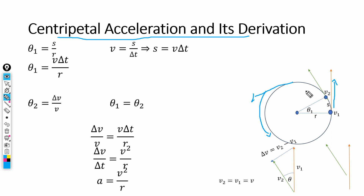To derive centripetal acceleration, consider an object at point v1 with velocity v1. This is the radius of the circular path. After some time, the velocity changes from v1 to v2, and the object travels a displacement s. So when the object moves from v1 to v2, it has velocity v1 at the first point and velocity v2 at the second point.